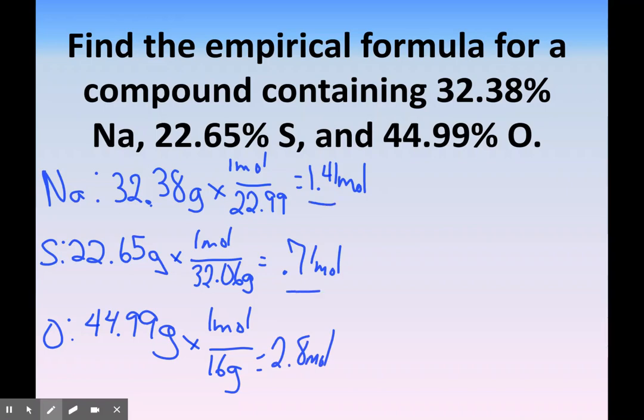Now I'm going to look at my three answers. Whichever one's the smallest, everything will get divided by that. 0.71 is the smallest. So 1.41 divided by 0.71 gives me 1.98, so I'm going to say that's 2, and 2.8 divided by 0.71 is 3.9, so we'll call that 4.